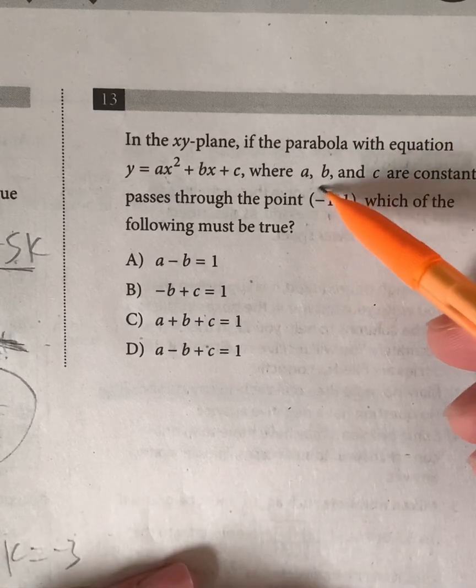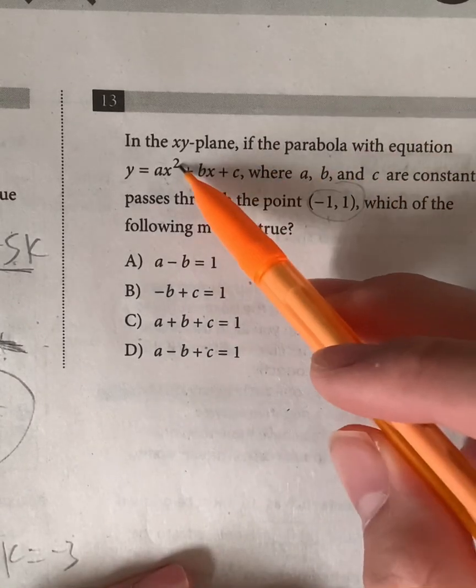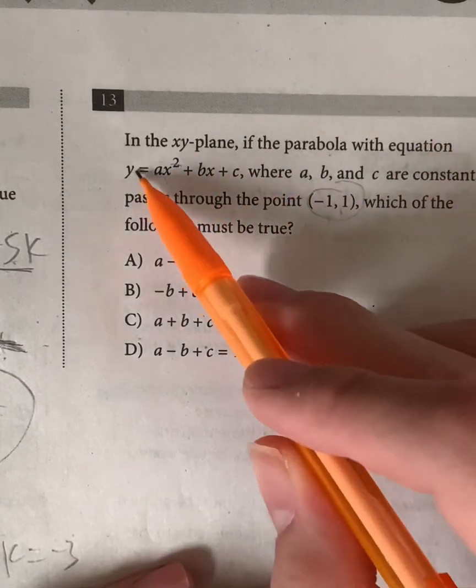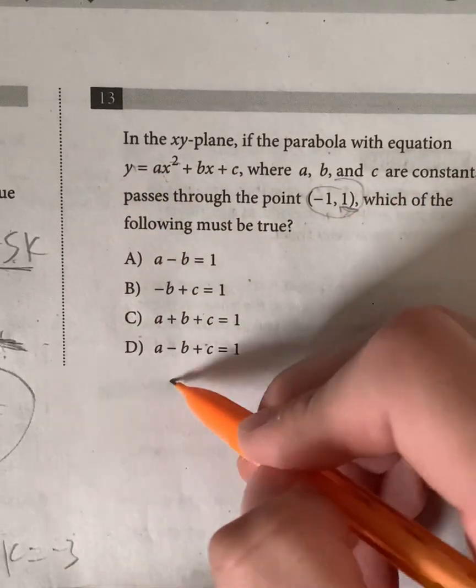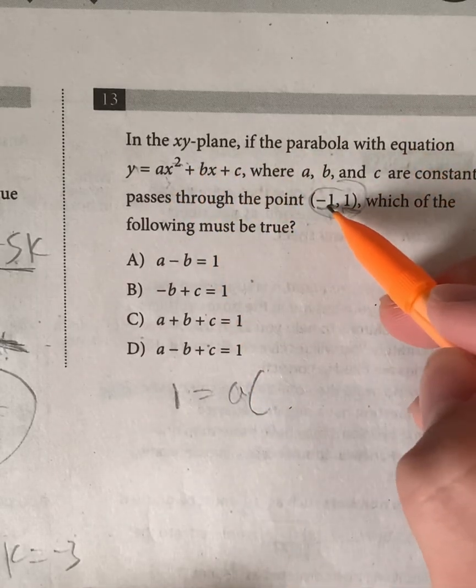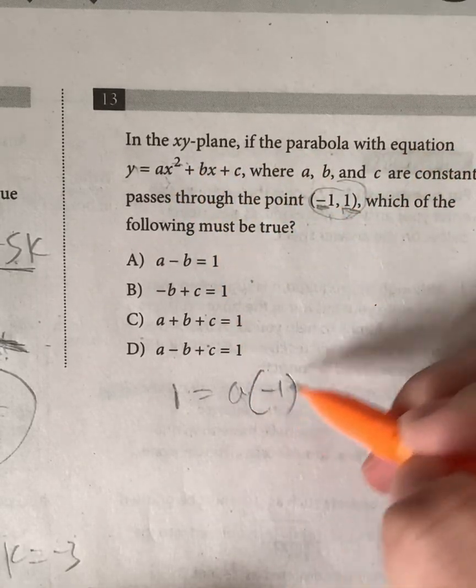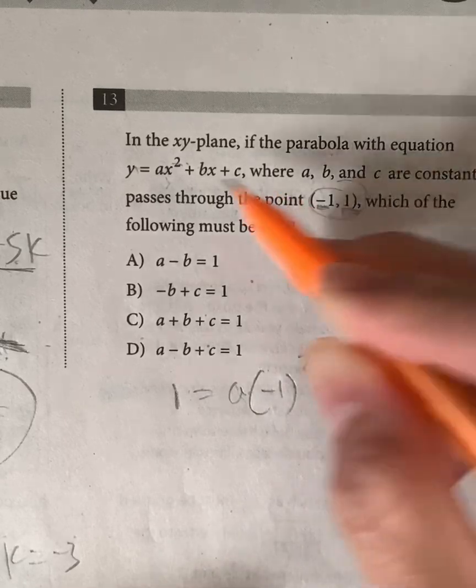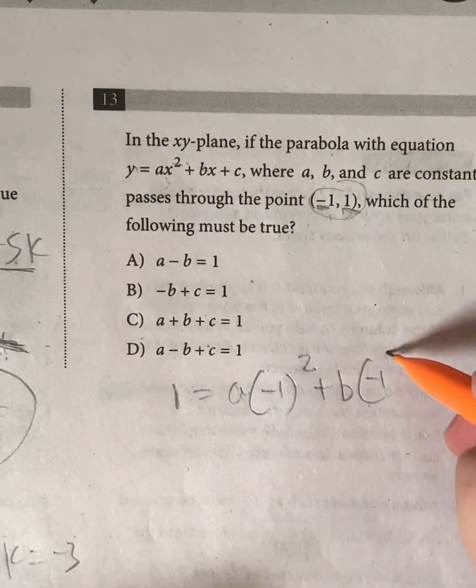So because negative 1, 1 is a point right here, let's just plug in it. So the y value is 1. So 1 is equal to a times x squared. x is equal to negative 1. Negative 1 squared plus b times negative 1 plus c.